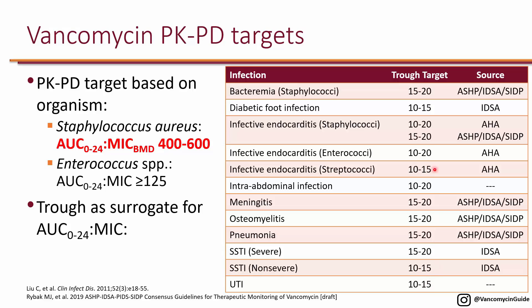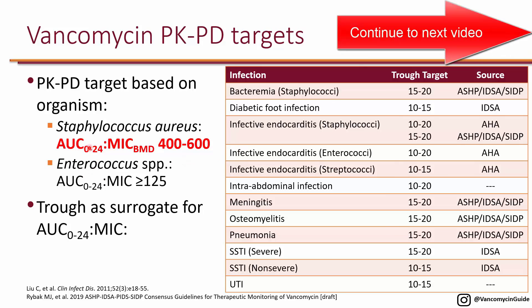Most hospitals in the U.S. are actually following trough-based targets. You need to know all these targets because any hospital you go to may be using them. In the future, it's likely that hospitals will slowly start to transition to targeting AUC-to-MIC of 400 to 600 for Staphylococcus aureus specifically.